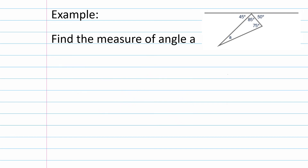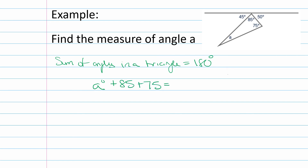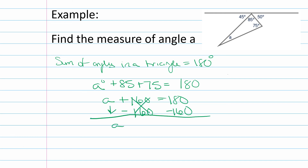Now let's find angle a. We now know the other two parts of the triangle. The sum of angles in a triangle equals 180 degrees, so a plus 85 plus 75 equals 180 degrees. Combining like terms: 85 plus 75 equals 160. So a plus 160 equals 180; subtract 160 from both sides and angle a equals 20 degrees.